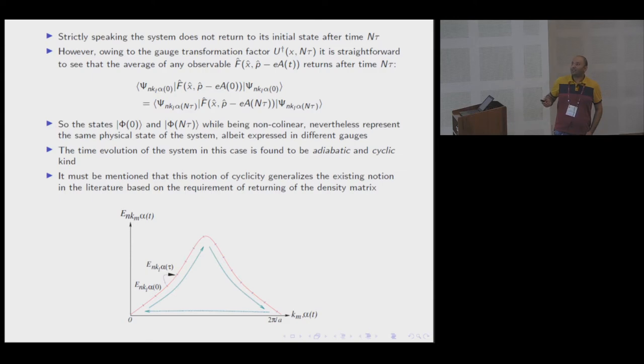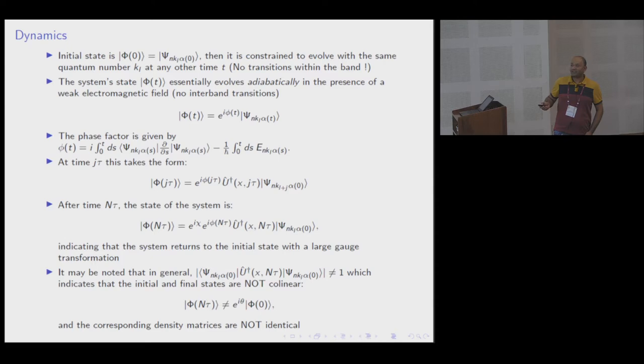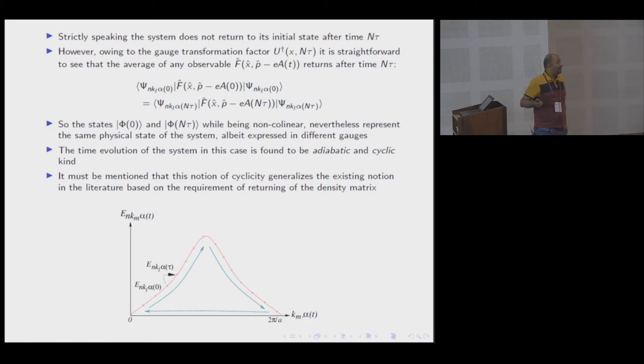One may say, hooray, we are back to the original state. It's a cyclic process. But hold on, that's not the case. Because this state and the original state overlap, if you calculate, mod is less than one. It is not the same state. You are not returning on the same ray to speak in the language of Professor Mukunda. Because there is a non-trivial operator sitting here that does not allow you to interpret in that way. Corresponding density matrices are not identical.